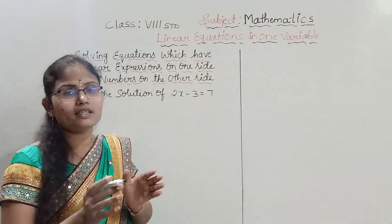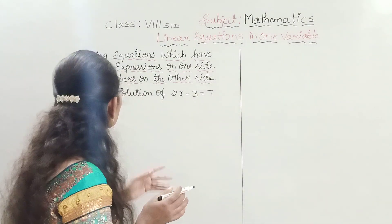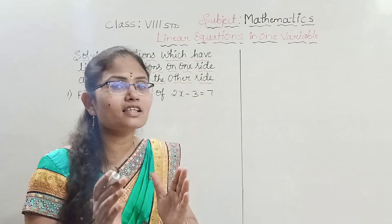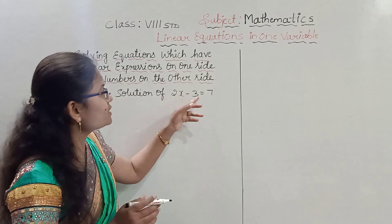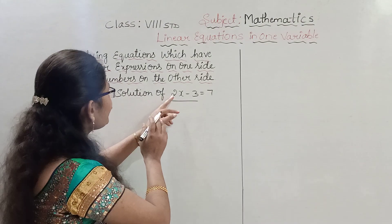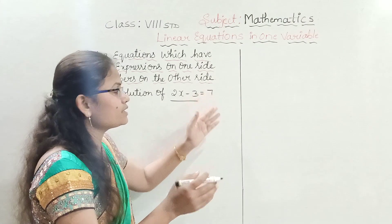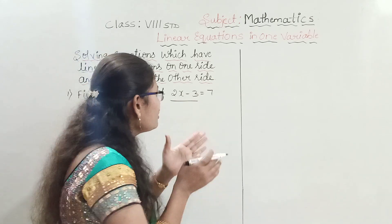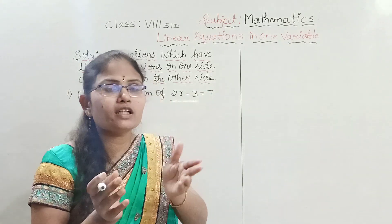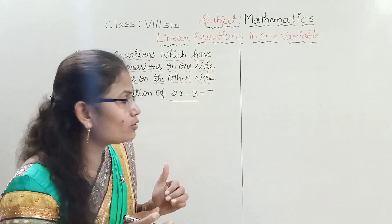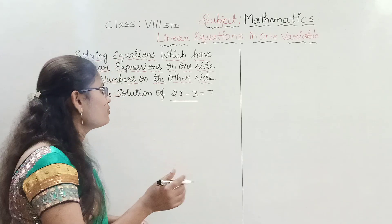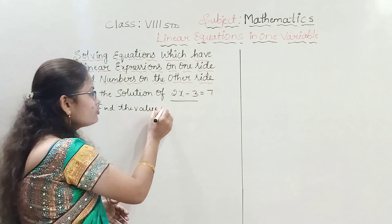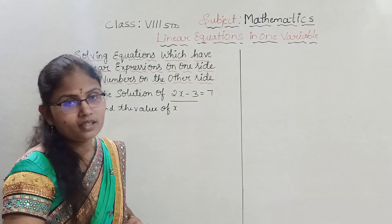Now observe the first example. We have to find the solution of 2x minus 3 equals 7. Here, there is a linear expression on the LHS side and only a number on the RHS side. Finding the solution means we have to find the value of x.